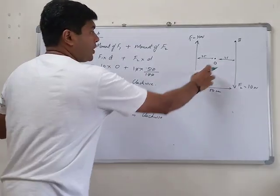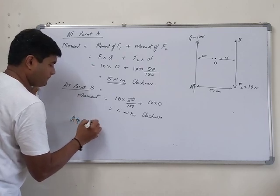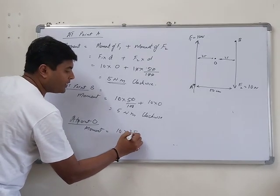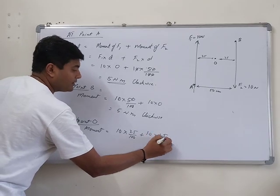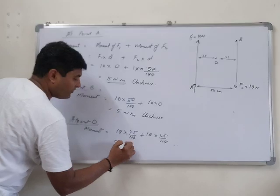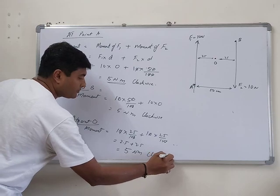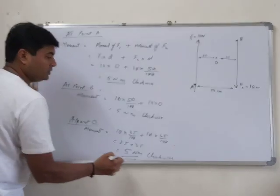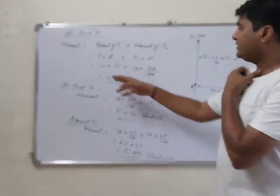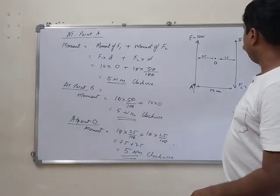Finally, at point O: moment equals F1 × (25/100) + F2 × (25/100) = 2.5 + 2.5 = 5 newton meter clockwise. So from all three points — A, B, and O — the moment is 5 newton meter clockwise.